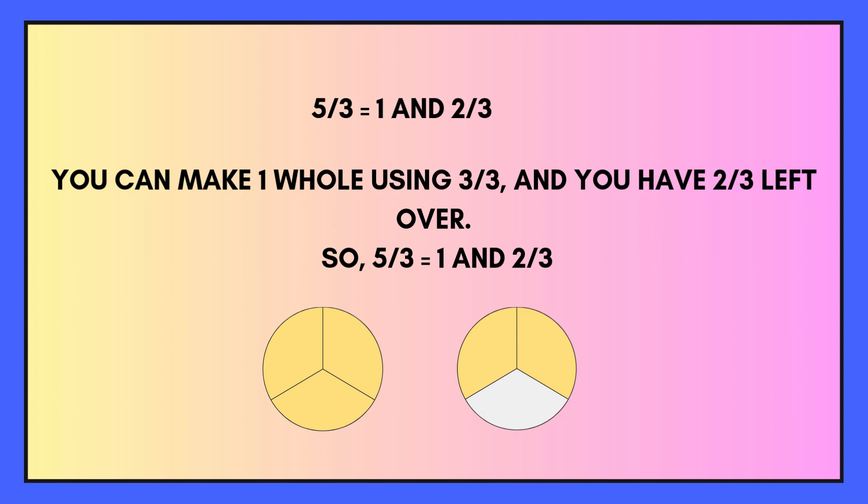5 thirds. We can get 1 three into 5, but we still have 2 left over. So the answer is 1 — as in 1 whole — and 2 thirds, because we have 2 thirds left over.